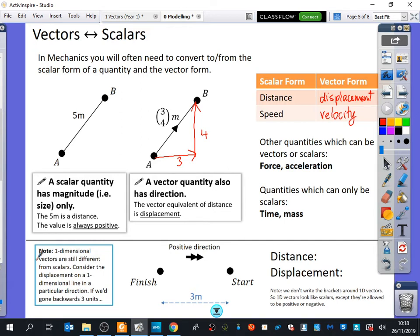There's a note down here at the bottom. It says, one-dimensional vectors are still different from scalars. Consider the displacement on a one-dimensional line in a particular direction. If we'd gone backwards three units. So if we said that this was the start and this was the finish, but actually we are measuring to the right as the positive direction, this vector quantity, this displacement as we go backwards, is going to be different to the distance. The distance between the start and the finish is three metres, but the displacement, because we're going in the negative direction, the displacement would be minus three metres. So that is actually a vector quantity. Even though we won't write it like a column vector, it is still a vector quantity, but just in one dimension. When I talk about one dimension in maths, one dimension is just things moving left and right. Obviously, two dimensions is moving up and down and left and right like that as well. So you can have vector quantities that are one-dimensional and it will either be saying to the right is positive and to the left is negative or vice versa.